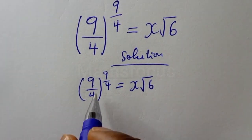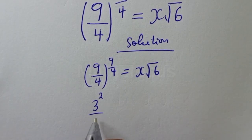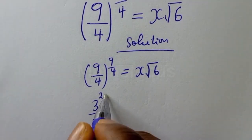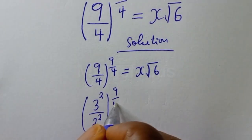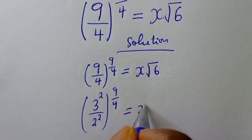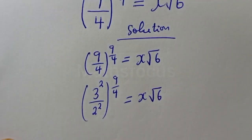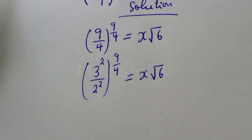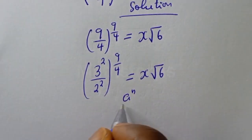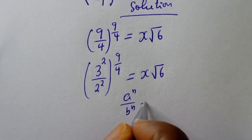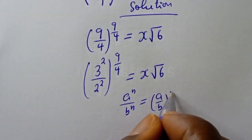This is 3 squared over 2 squared to the power of 9 over 4, equal to s square root of 6. Take note: if you have a raised to power n over b raised to power n, this is equal to a over b to the power of n.